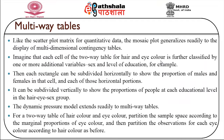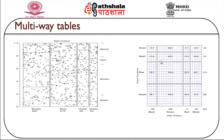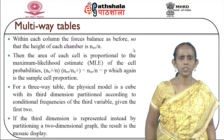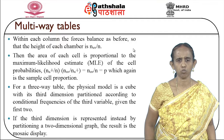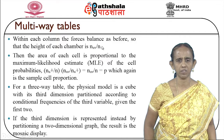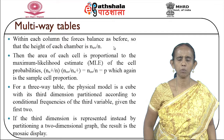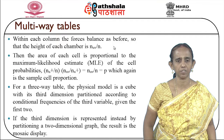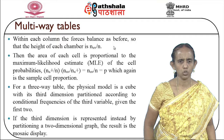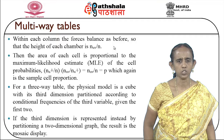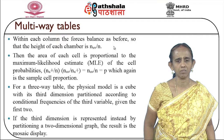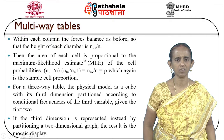Within each column, the height of the chamber is given as N_uv by N, and the area of each cell is proportional to the maximum likelihood estimate (MLE) of the cell probabilities: N_u+ / N into N_uv / N_u+ equals N_uv / N, which equals P, the sample cell proportion. For a three-way table, the physical model is a cube with its third dimension partitioned according to the conditional frequencies of the third variable given the first two.